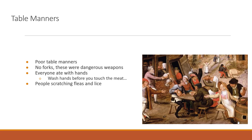Looking at table manners during the Renaissance—they were very poor. People did not eat with forks because they could be used as dangerous weapons. Everyone ate with their hands, washing them before touching meat but eating in an uncivilized manner. People also had poor personal hygiene—fleas and lice were common—and trash on the ground was visible around the table. Table manners were certainly not up to modern standards.